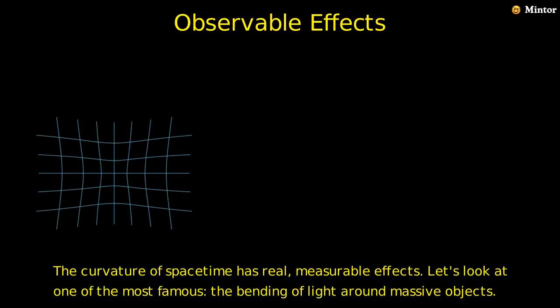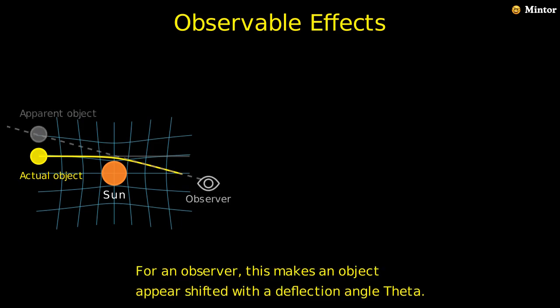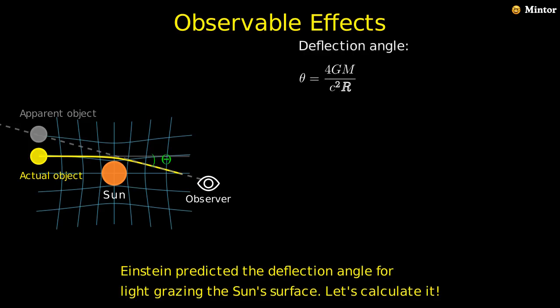The curvature of spacetime has real, measurable effects. Let's look at one of the most famous, the bending of light around massive objects. When light from a distant star passes near the sun, its path gets bent by the curved spacetime. For an observer, this makes an object appear shifted with a deflection angle θ. Einstein predicted the deflection angle for light grazing the sun's surface. Let's calculate it.